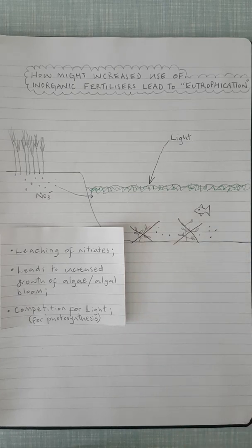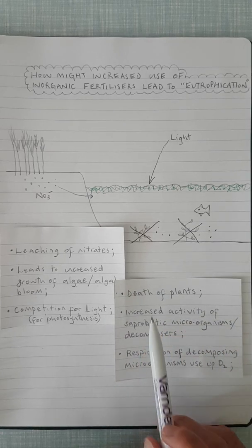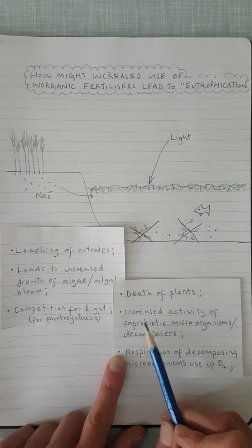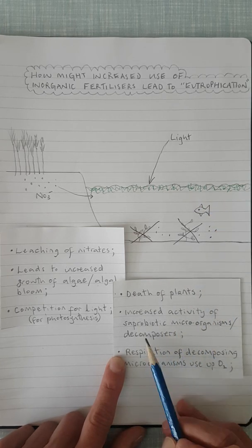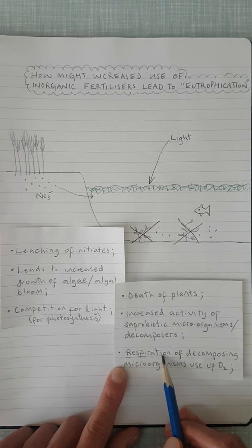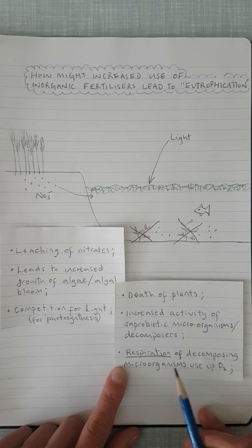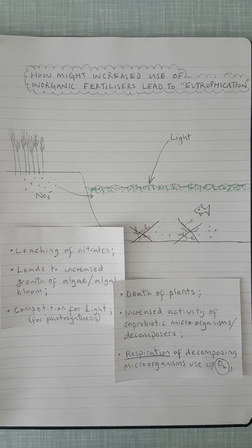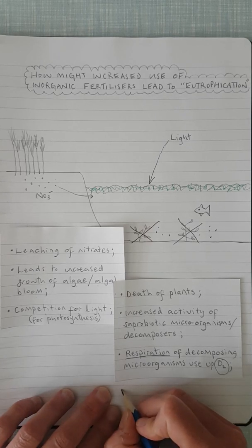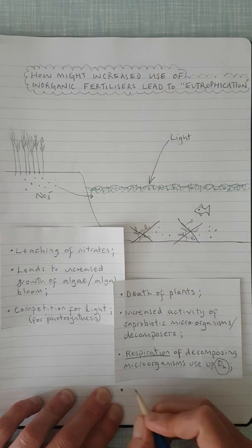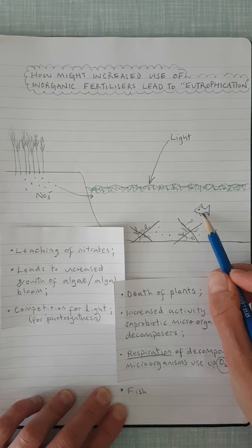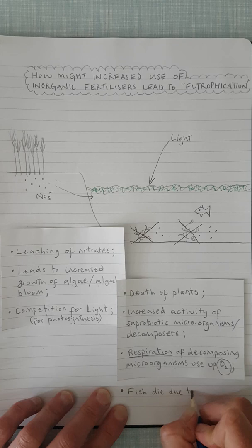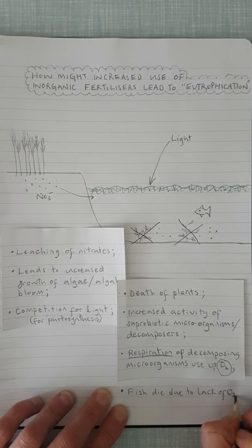As they die, the saprobiotic microorganisms that are in the body of water will increase their rate of activity and break down the organic molecules that are inside the cells of these dead plants. And as they do it, they are respiring. So the next things you need to say is if the plants die because they can no longer get light for photosynthesis because of the algal bloom, there will be an increased activity of these saprobiotic microorganisms. Sometimes these are called decomposers. And the respiration, it's important to get this bit, the respiration of decomposing microorganisms uses the oxygen that's available in the body of water. So if the oxygen is being used, the fish will die due to lack of oxygen. So they can no longer respire and so they die.